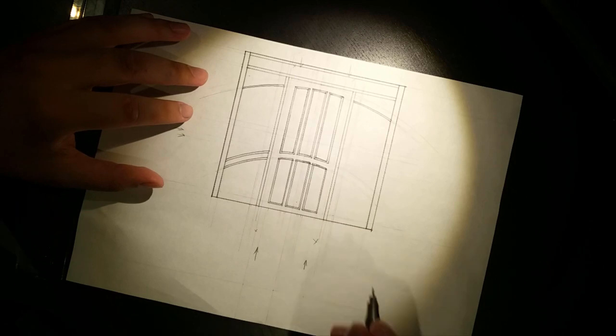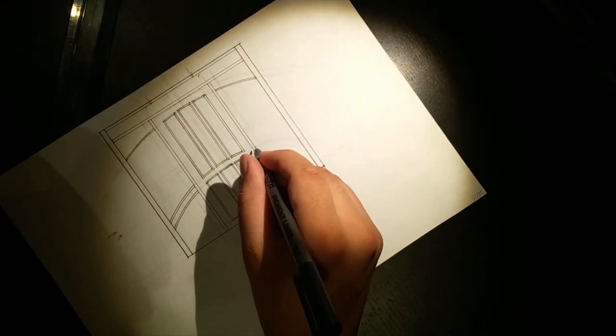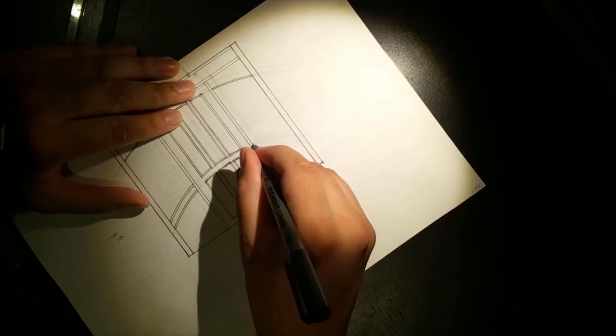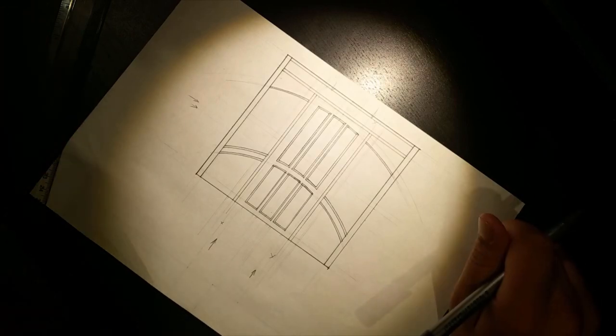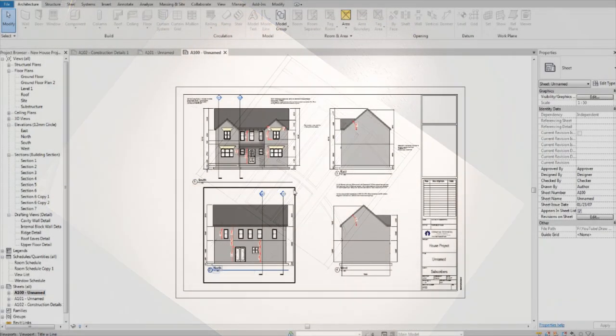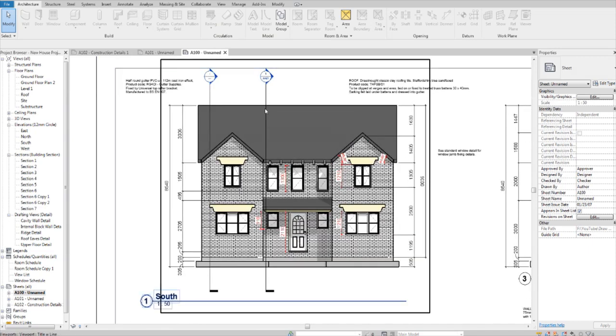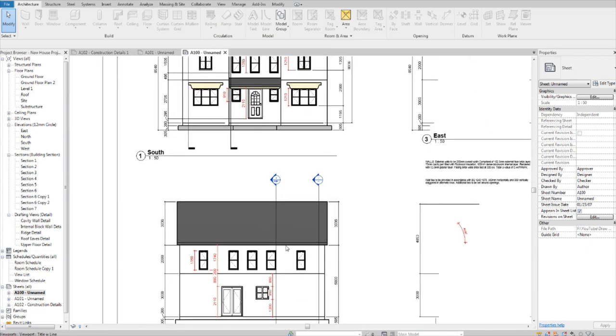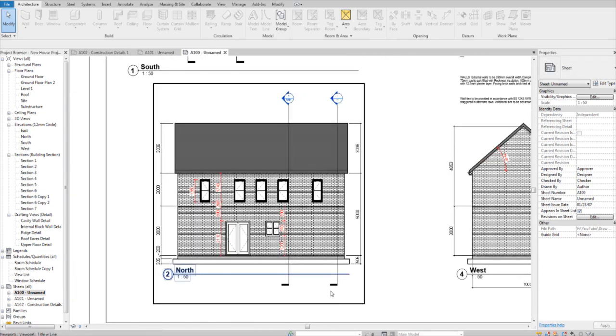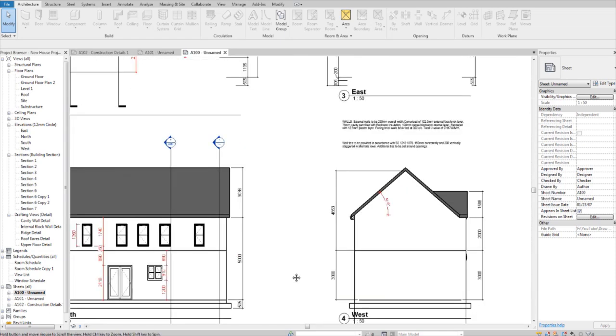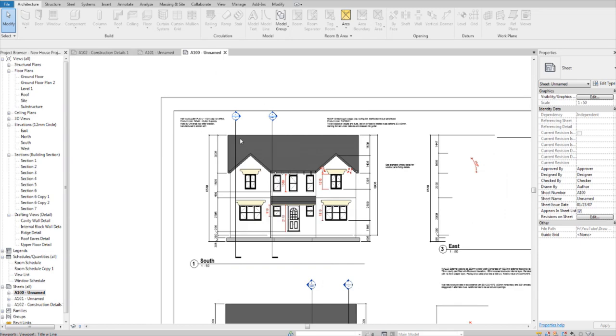Sometimes the model doesn't do exactly what it's told to or if it's shifted in any way during the progress of the project then it would cause changes to any existing sections and call-outs of the model. For example look at these elevation drawings that I produced by taking elevation views from the model. They have unnecessary details appearing on them which distorts how I want the drawings to be presented.